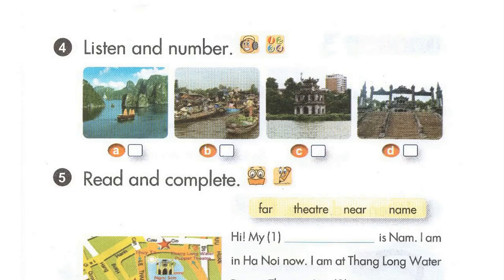Page sixty-seven. Lesson two. Activity four. Listen and number. One. Is this Hai Long Bay? Yes, it is. It's beautiful.